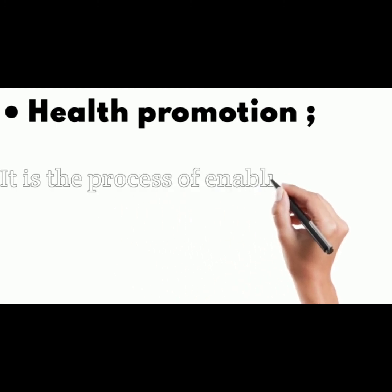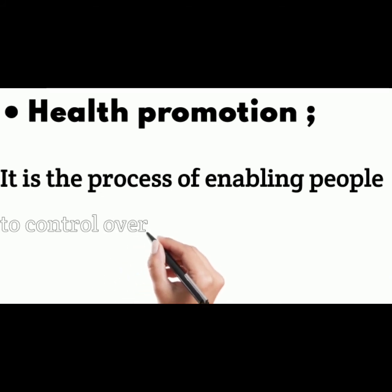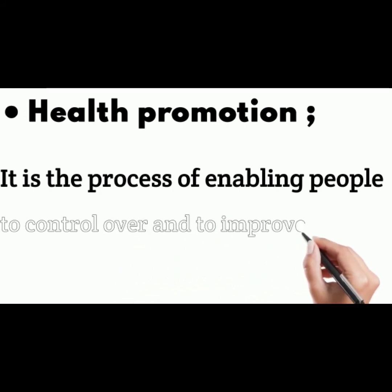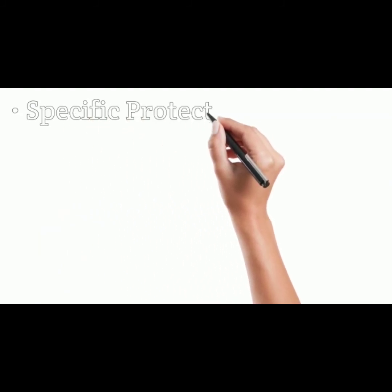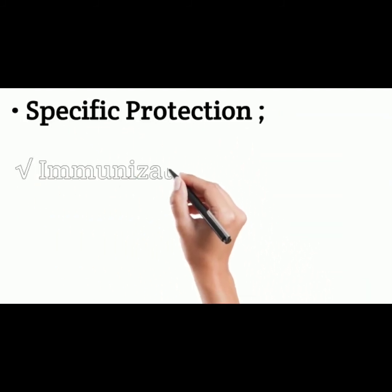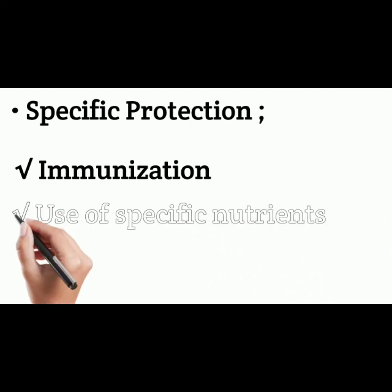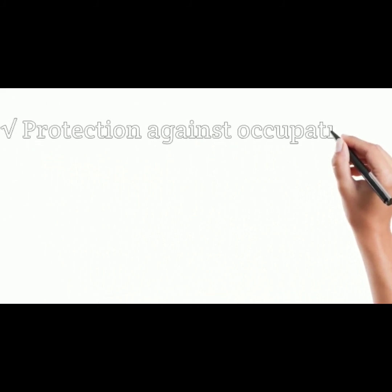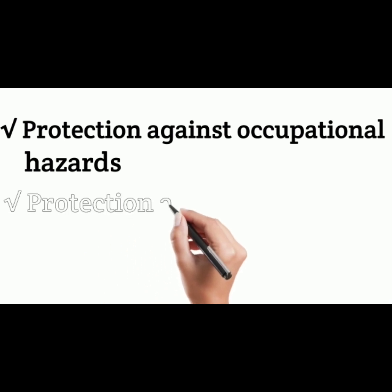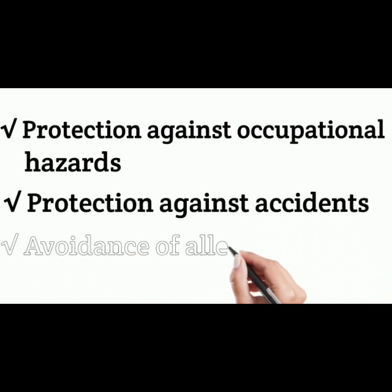Modes of intervention in primary prevention are health promotion and specific protection. Health promotion is the process of enabling people to take control over and to improve their health. Specific protection interventions currently available include immunization, use of specific nutrients, chemoprophylaxis, protection against occupational hazards, protection against accidents and adverse effects of allergies.